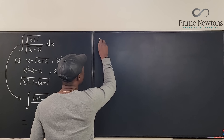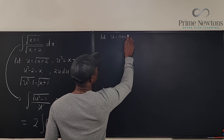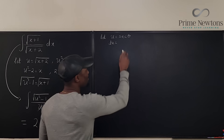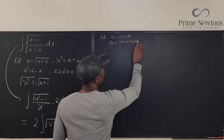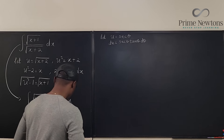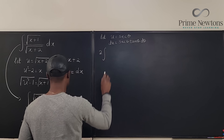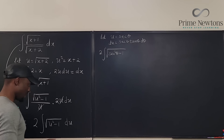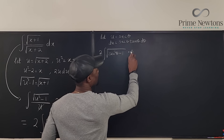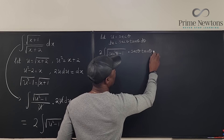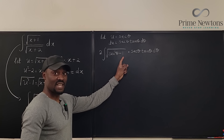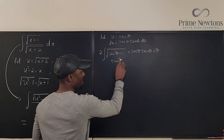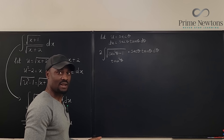Let u equal secant theta. Then du equals secant theta tan theta d theta. Substituting in, the square root of u squared minus one becomes the square root of secant squared theta minus one. By the Pythagorean identity, secant squared theta minus one equals tan squared theta, so the square root gives tan theta.